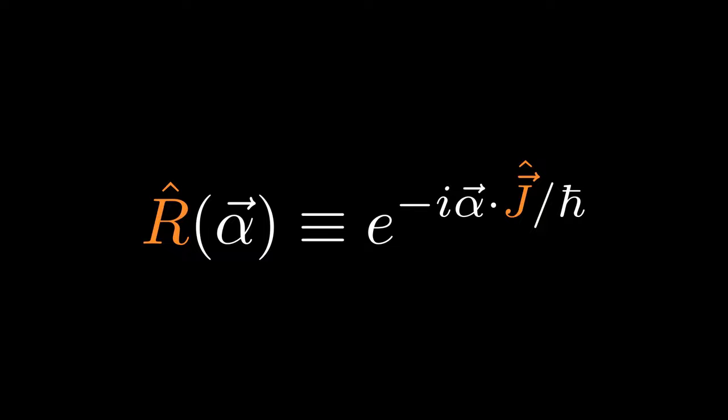However, there is a more fundamental way to define angular momentum. That is, angular momentum is the generator of rotation. Mathematically, it is written as R(α) = e^(-iα·J/ℏ). R is the rotation operator. It rotates our system about an axis.